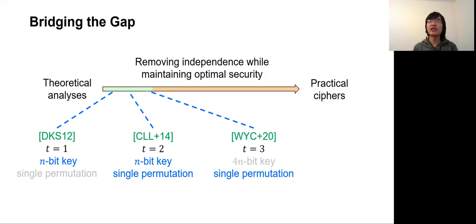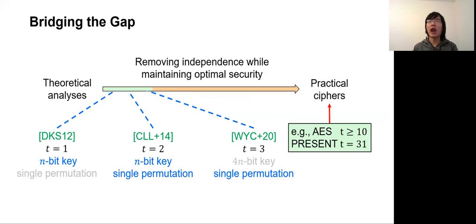Then, until very recently, the three-round case was addressed by U et al., who reduced the number of permutations used in three-round KAC to a single permutation, under the assumption that all subkeys are independent and uniform. However, for any round larger than 3, nothing was understood in terms of reducing the master key length or the number of permutations, while practical ciphers have large rounds — for example, AES has at least 10 rounds and PRESENT has up to 31 rounds.